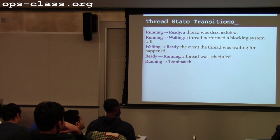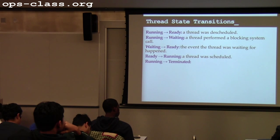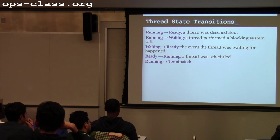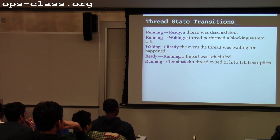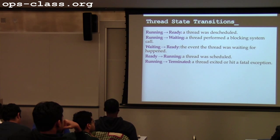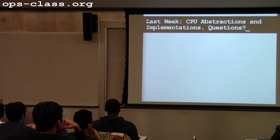What about running to terminated? I could have done something bad that caused the operating system to terminate me, or I might have just exited — I'm done. Or perhaps I hit a fatal exception that caused the process to terminate. This is something you'll implement for an assignment: both thread exit and the handler for fatal exceptions hit by threads.